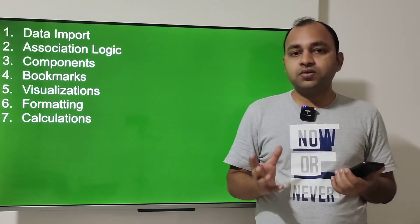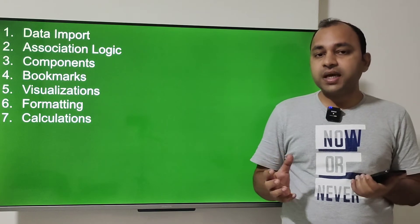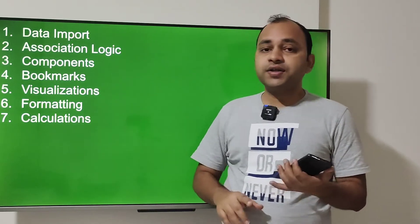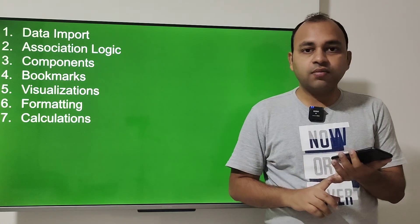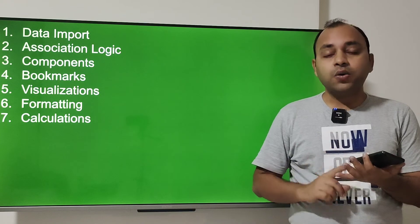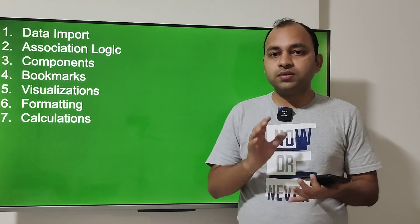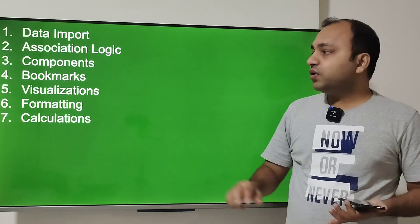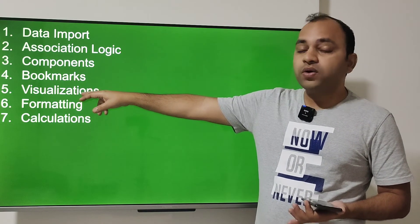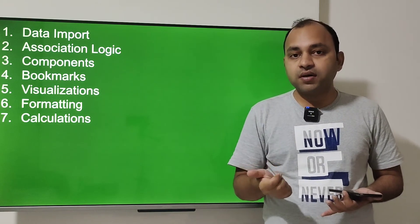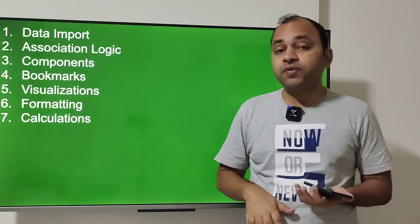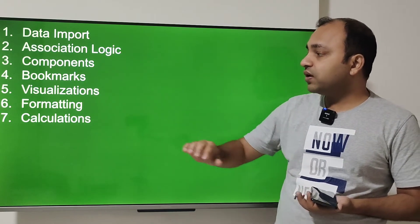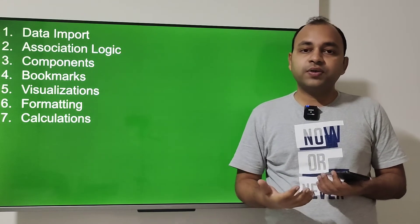The seventh topic is calculations. Qlik Sense has a very strong calculation framework with many features. You need to know how to do sum, distinct sum, counting, distinct counting, average, median, and other basic calculations, and how to apply them across different visualization types. You may have already explored some calculations while exploring visualizations, but here explore further — different keywords and configuration options available in calculations.